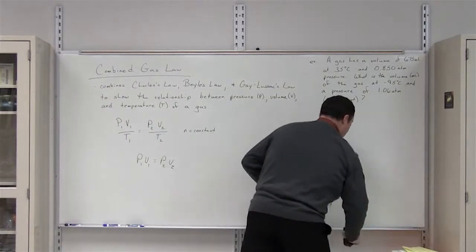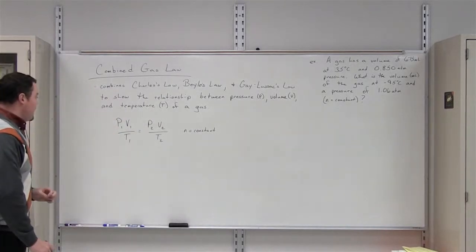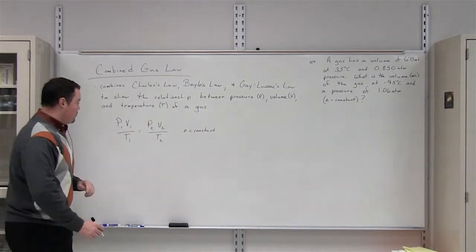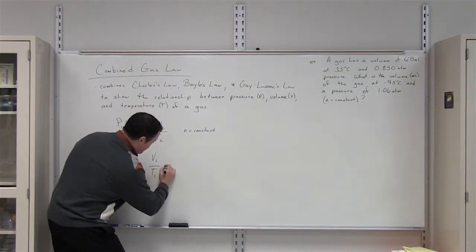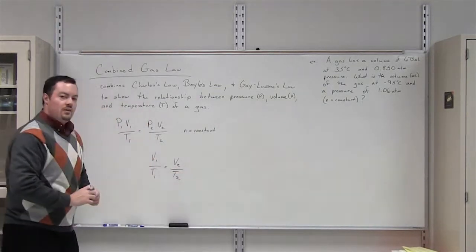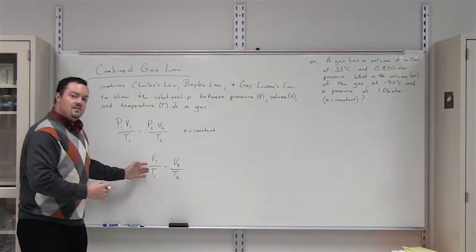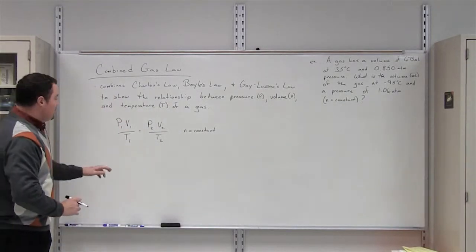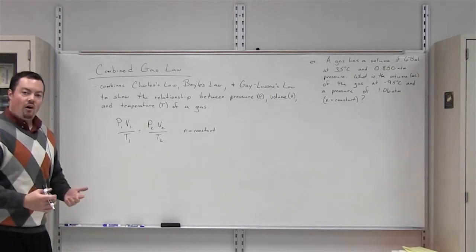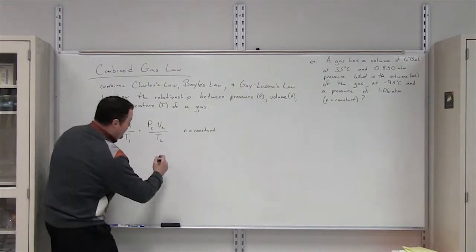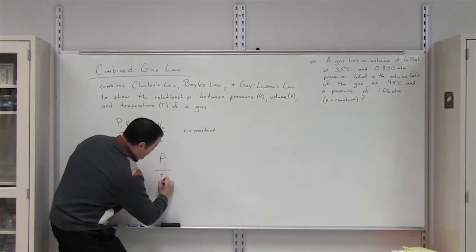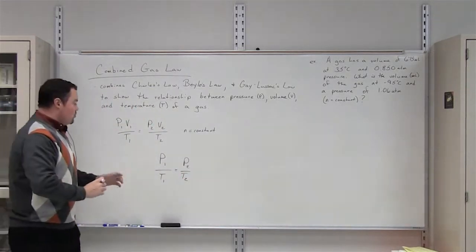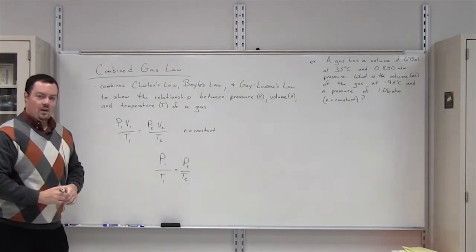Charles' law looks at the relationship between volume and temperature of a gas holding pressure constant. So if we get rid of the pressure variables, we see that V1 over T1 is equal to V2 over T2, which is the formula for Charles' law. Finally, Gay-Lussac's law looks at the relationship between pressure and temperature holding volume the same, giving us P1 over T1 equals P2 over T2. So we can derive each of these three gas laws from the combined gas law.